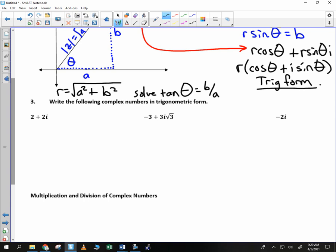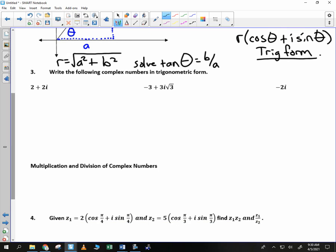Ready to try an example? How about three of them? And then you can work on your assignment. 2 plus 2i. This is standard form. I'm going to turn it into trigonometric form.